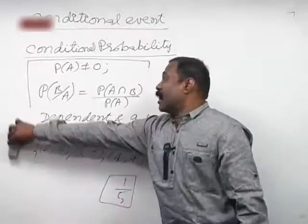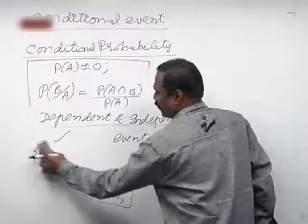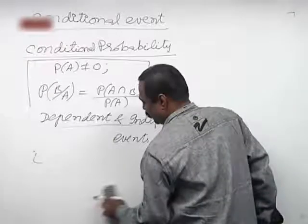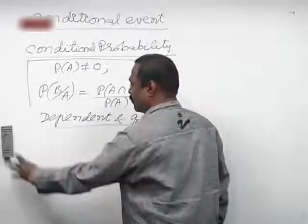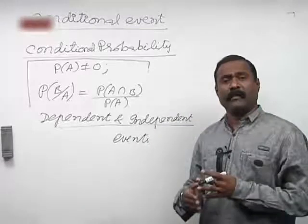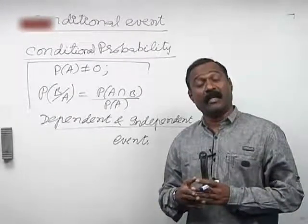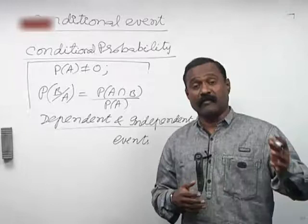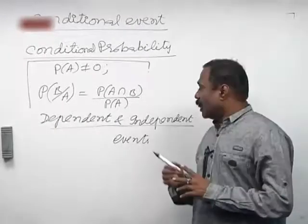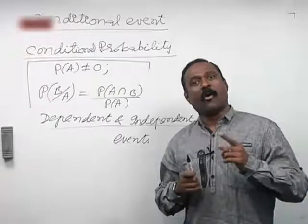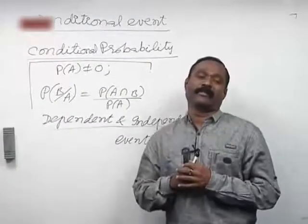Now, the dependent and independent events. Dependent means if the occurrence of one event influences the occurrence of another event, then they are said to be dependent events. If the occurrence of one event does not influence the occurrence of another event, then they are said to be independent events.